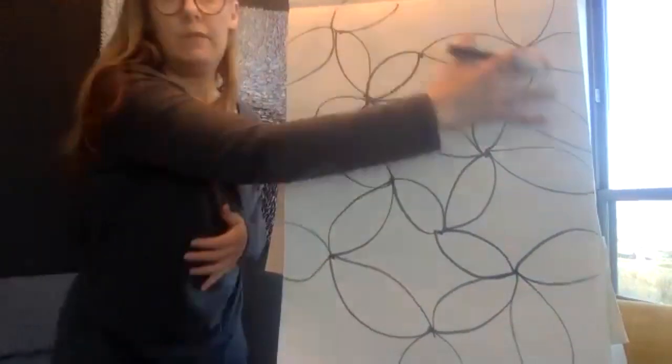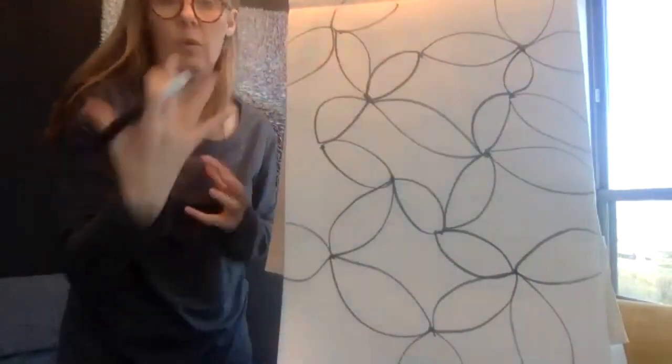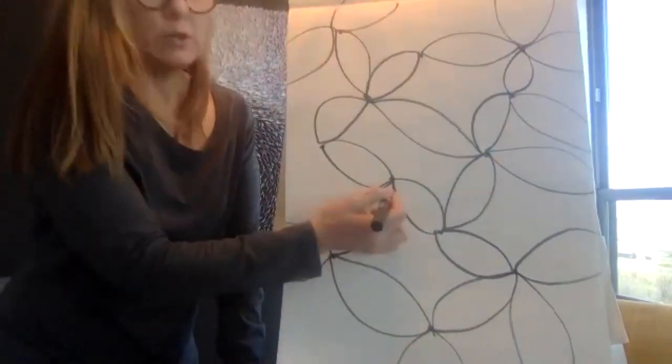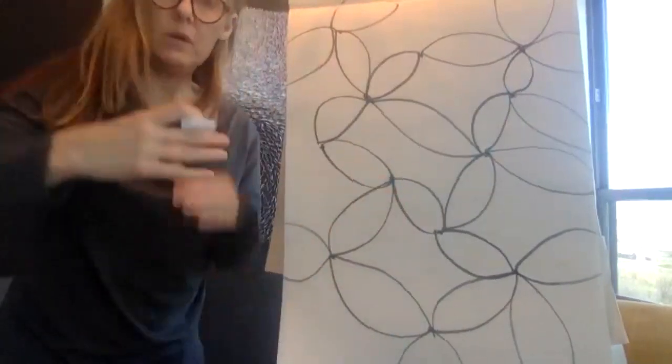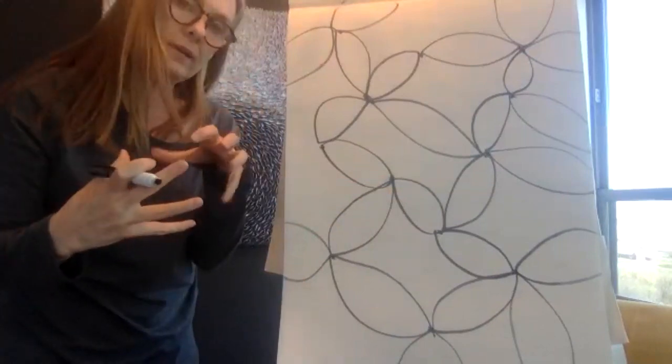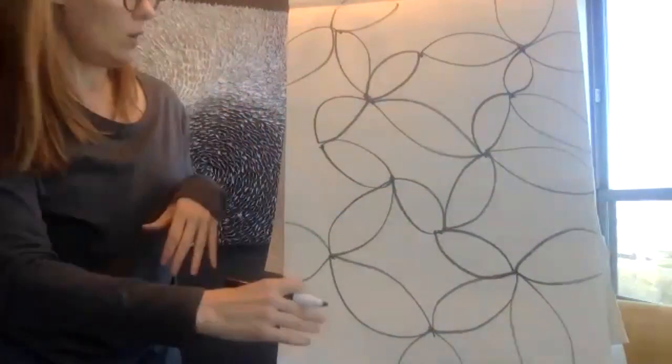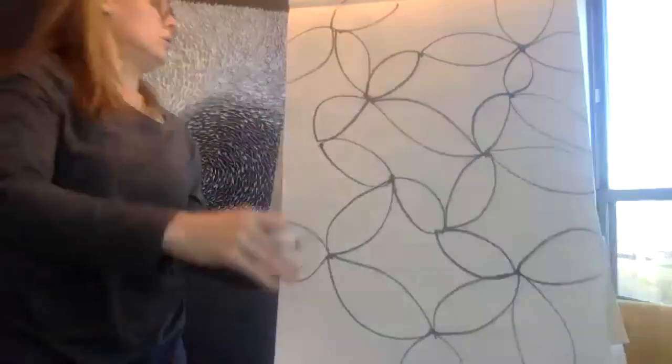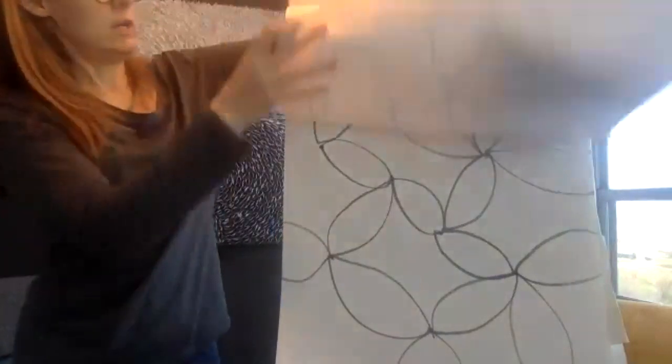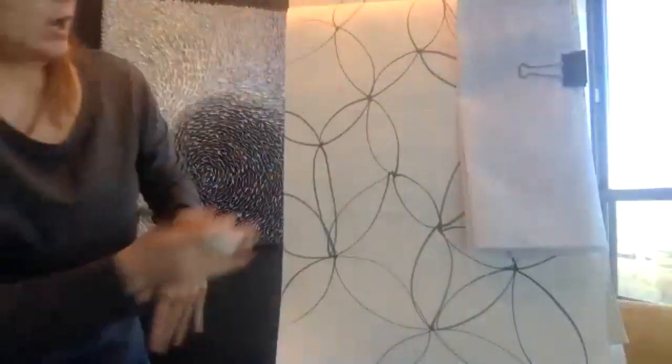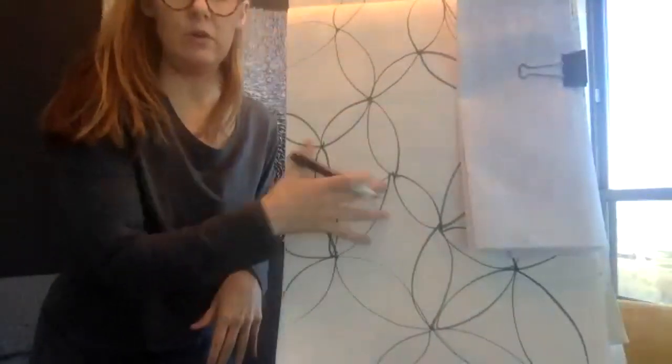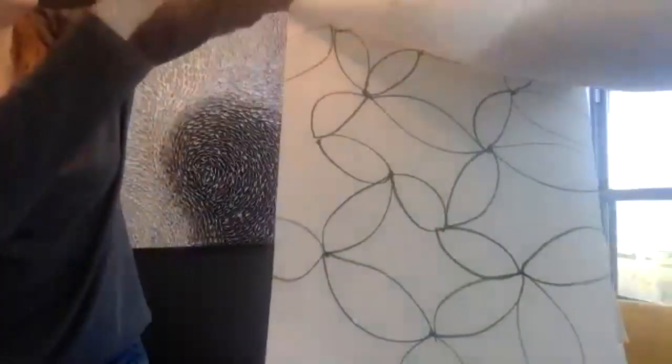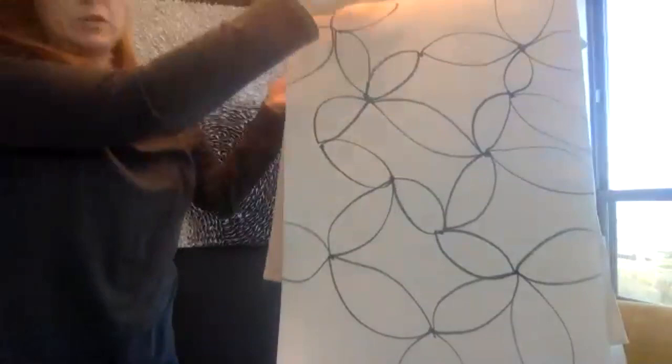So once you have these petal-like structures, you're going to have kind of your connecting. Now, the important part here is that you don't make your lines too straight because the curvature is what's going to help make that optical illusion. Now, I went ahead and started this project further. So it's the same dots that I had on the last paper.